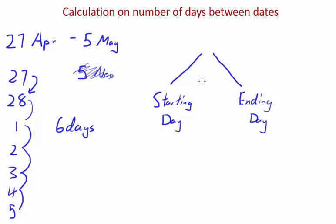Firstly I'll do it incorrectly. Let's say we include both the starting day and the ending day. In April there's 28 days, so 28 minus 26, because we want to include the 27th our starting day, plus five the number of days in May. What you would get is seven. That is one day too much than the actual number of days there are between the 27th of April to the 5th of May.